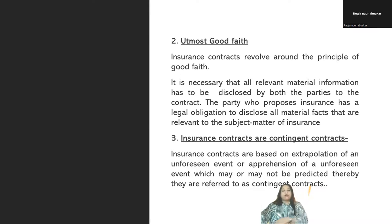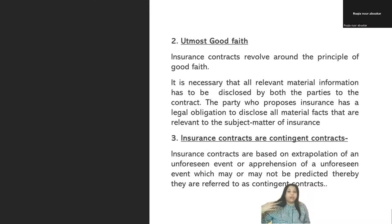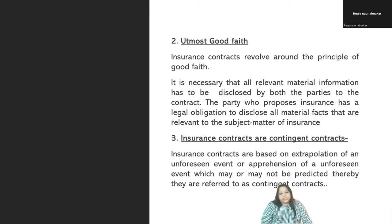Next: insurance contracts are contingent contracts. What is contingent? Contingent means something that involves contingency — a future unforeseen event. It is based on the extrapolation of an unforeseen event or the apprehension — the fear or threat — of an unforeseen event, an imminent event which is unforeseen, most highly probable, which may not be predicted. There might be something probable to occur that is referred to. So they will be referred to as contingent contracts — there is a possibility of it happening.